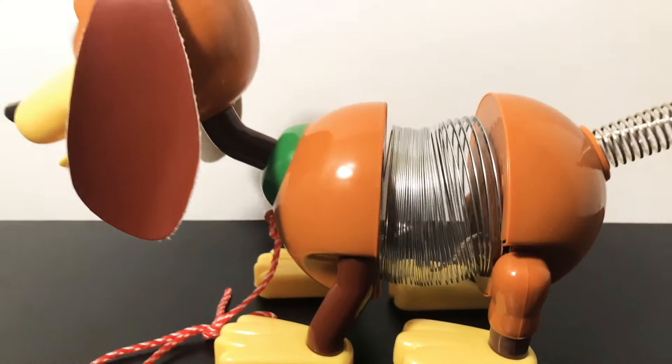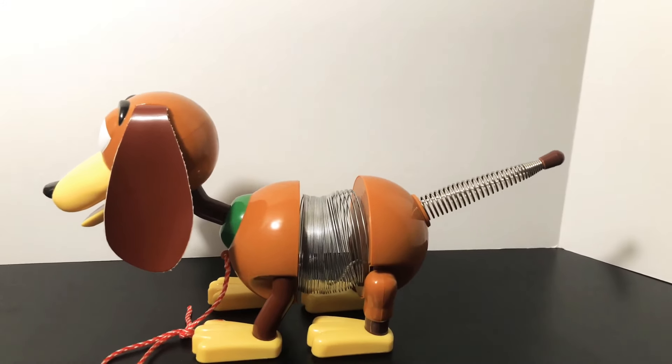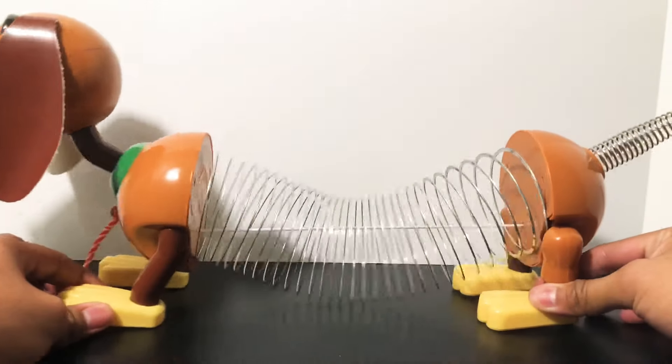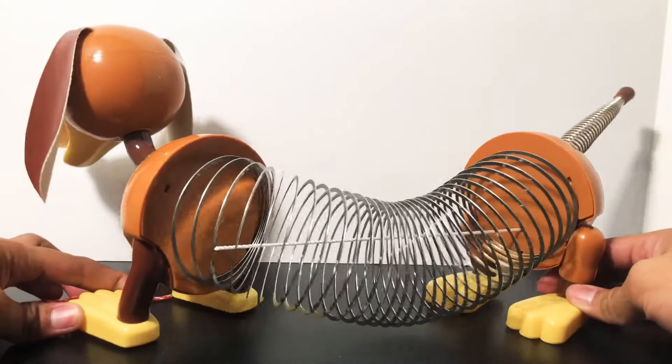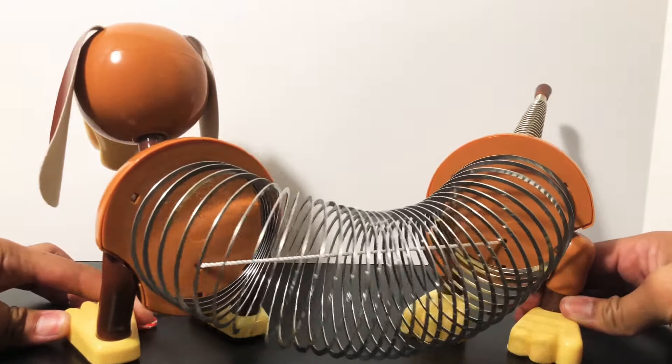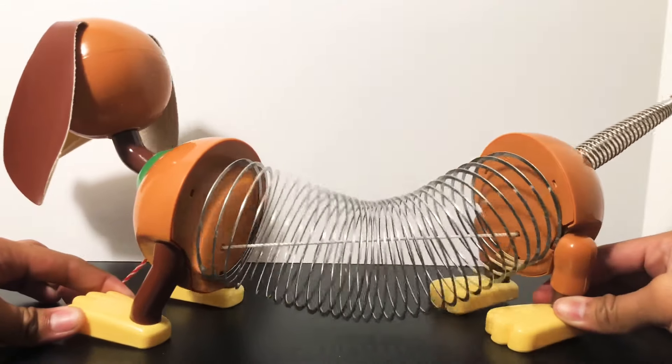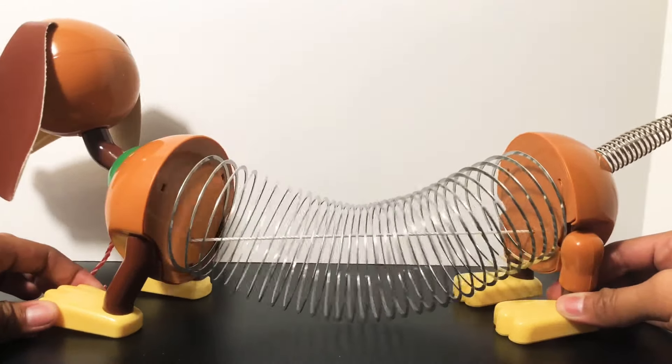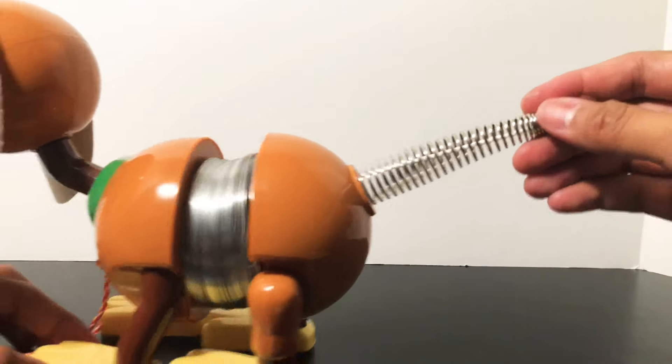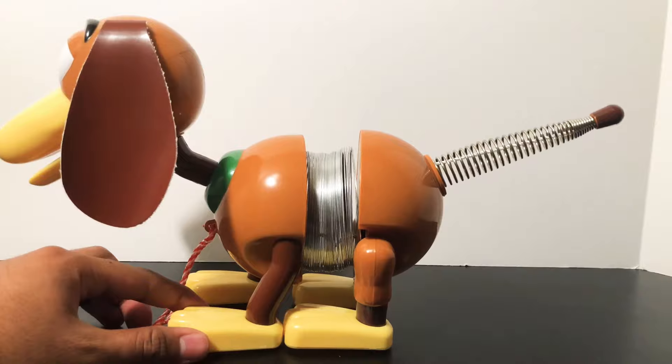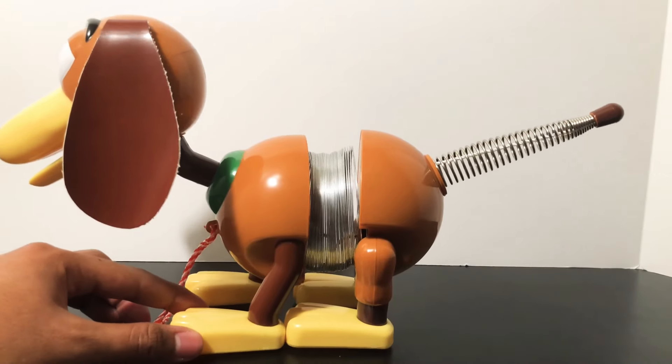But the problem is, there is a string that I want to cut. So as you can see, there is a string here in the middle that's supposed to be a safeguard so that you don't overstretch your toy. But I don't like it because it doesn't look movie accurate with a giant white string in the middle. So let's cut it together and see how it goes.